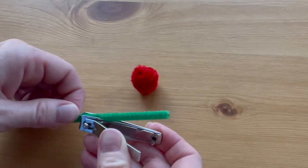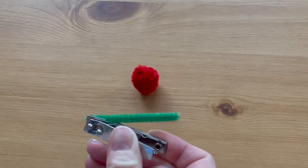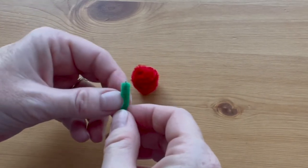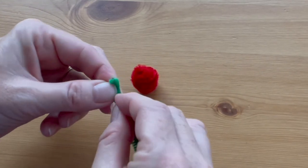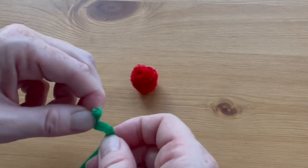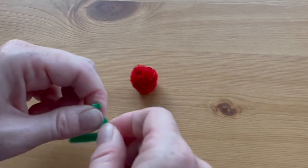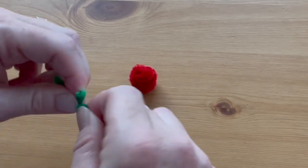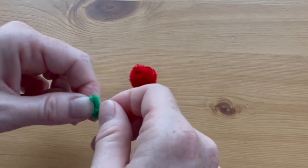Cut off a few inches of the green pipe cleaner. You're going to form this into a stem and a leaf. So fold just the top down a tiny bit and then form an oval-shaped leaf right underneath the stem and give it a twist once to hold the leaf in place.